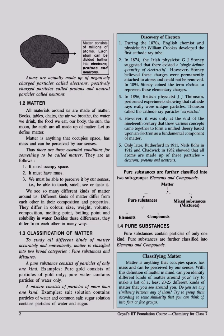Pure substances consist of particles of only one kind. Example: pure gold consists of particles of gold only. Pure water contains particles of water only. A mixture consists of particles of more than one kind. Example: salt solution contains particles of water and common salt. Sugar solution contains particles of water and sugar.